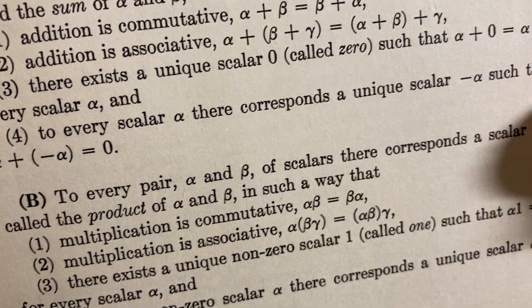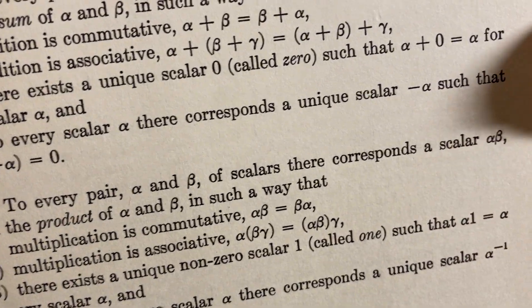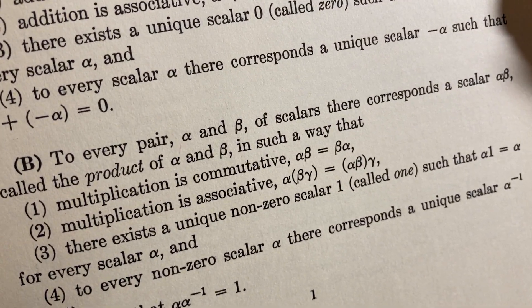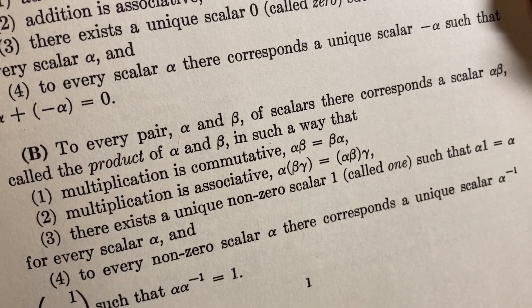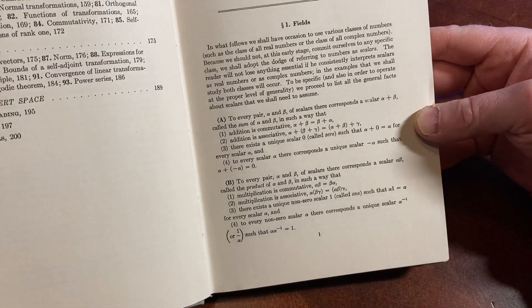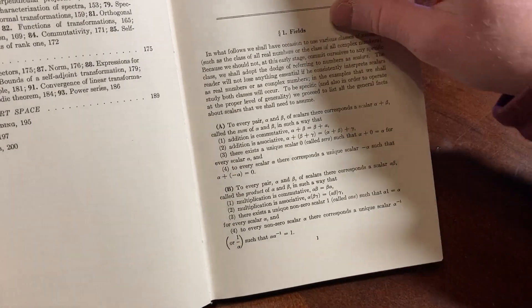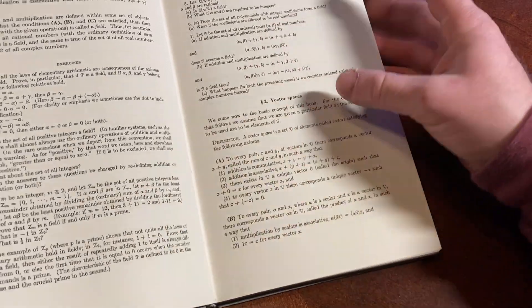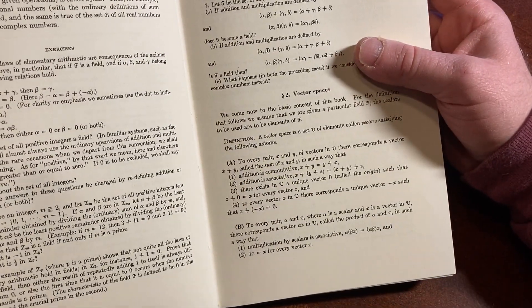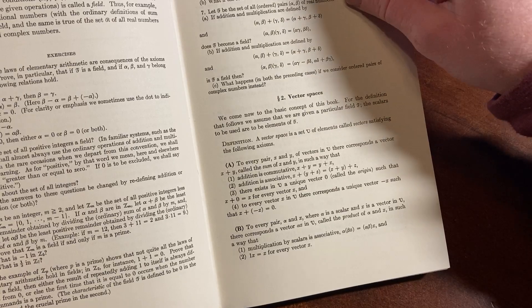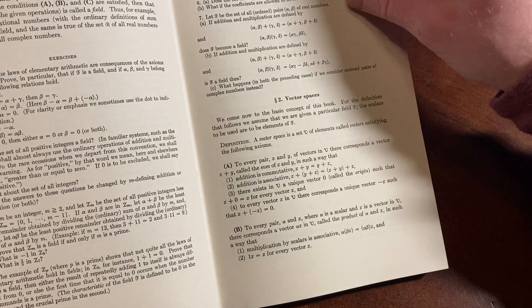To every pair, alpha and beta, of scalars, it corresponds a scalar alpha beta called the product of alpha and beta, in such a way that you have some properties there. Really cool. And so it goes through everything, which is kind of nice. There are exercises.